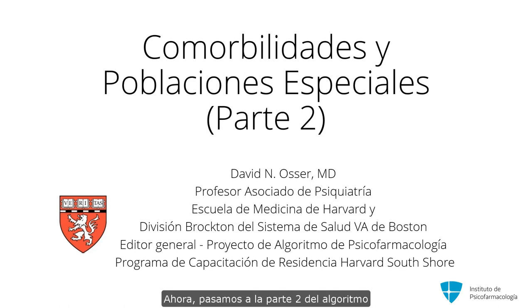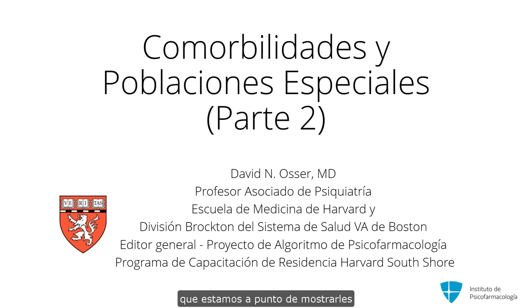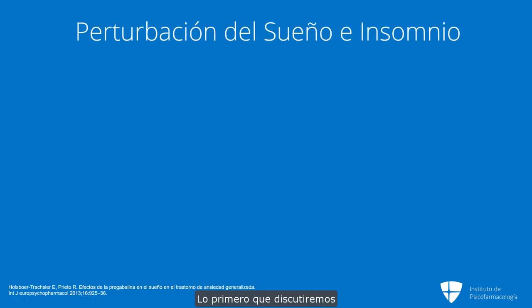We turn to Node 2 of the algorithm, where we evaluate for comorbidity and other special patient populations, and explain how there will be differences in the algorithm if they have these different circumstances and comorbidities. The first one we're going to discuss is sleep disturbance or insomnia, which is a common problem in people with GAD.